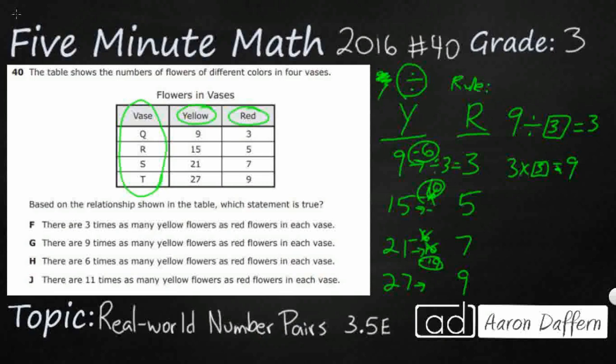So let's see what happens if I divide by 3. So 15 divided by 3, is that going to make 5? Yes, it does. 21 divided by 3, does that make 7? Yes. And 27 divided by 3, does that make 9? Yes, it does. Here's my rule. We're going to divide by 3.